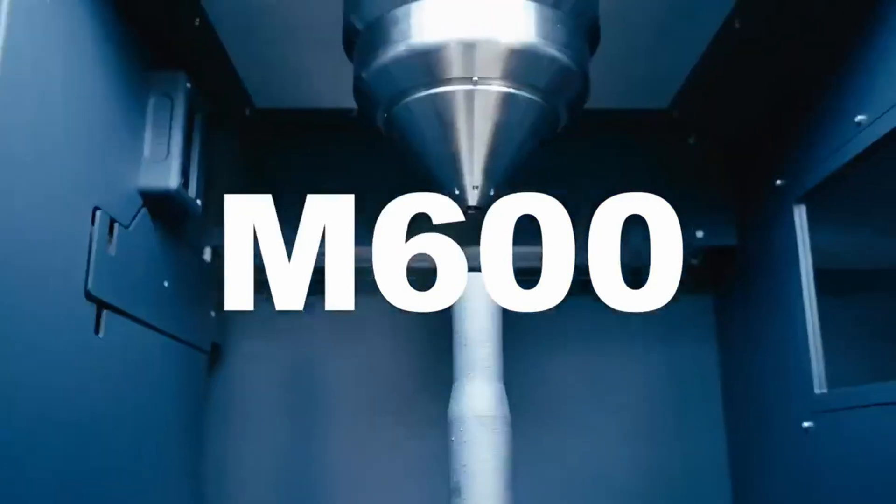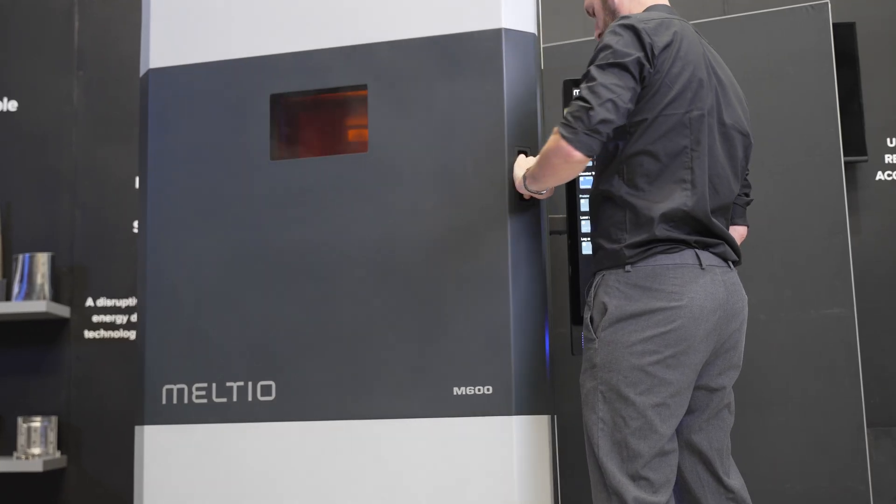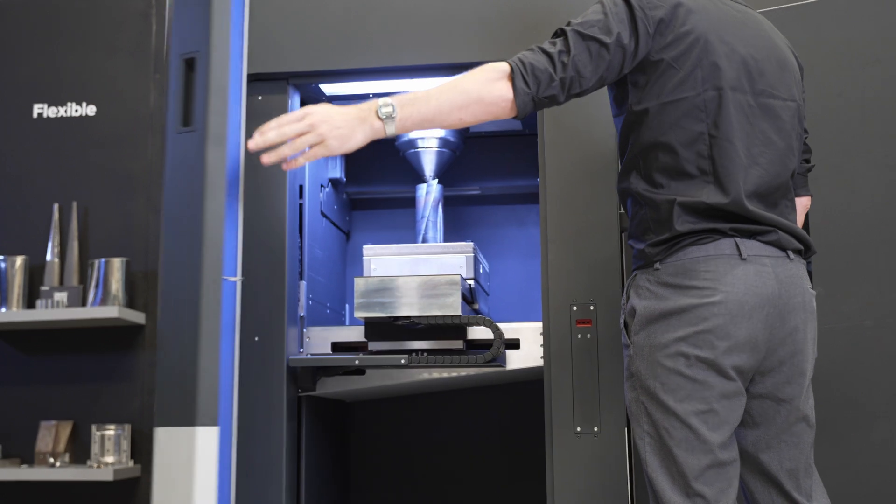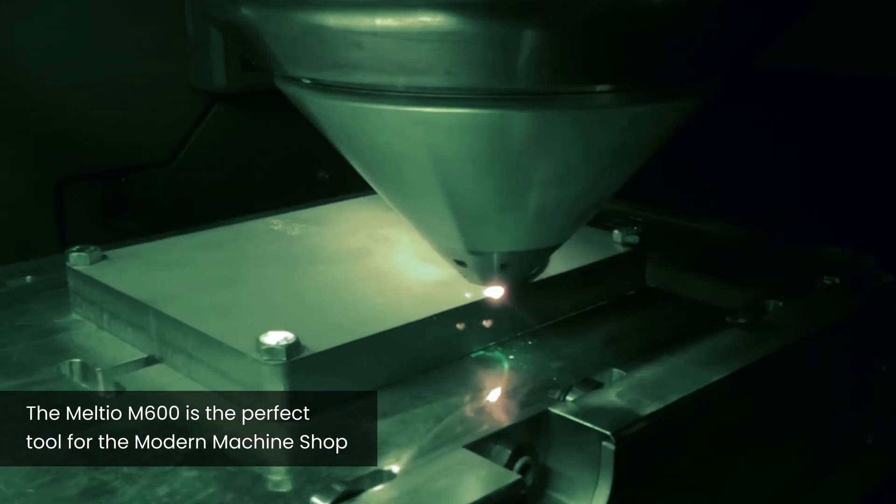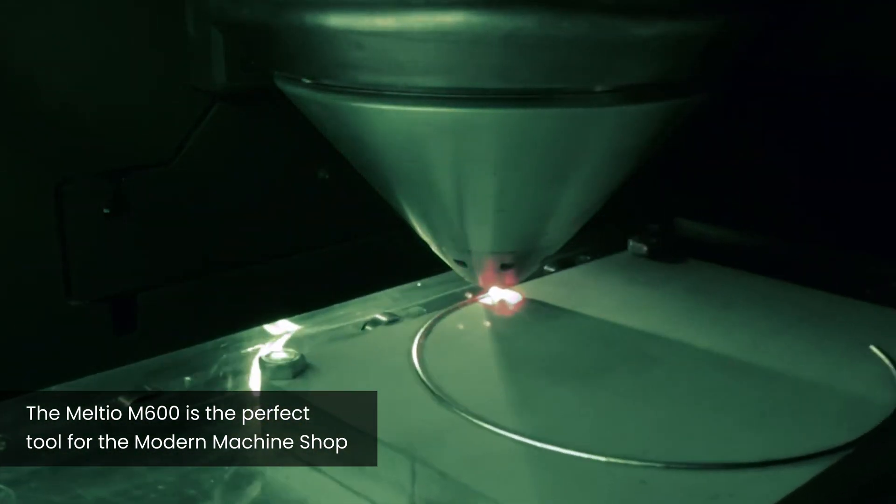The M600 is the perfect partner for a CNC machine. It's a tool for the machine shop. It's a highly efficient blue laser system for true lights-out additive manufacturing.